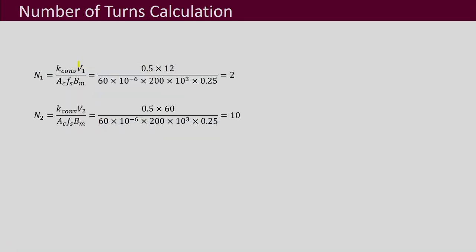Once the core cross-sectional area is known, we substitute into the turns equation using switching frequency, maximum flux density, k_con = 0.5, and V1 = 12 V (primary voltage). The number of turns N1 is obtained as 2, and similarly the secondary turns N2 is obtained as 10.